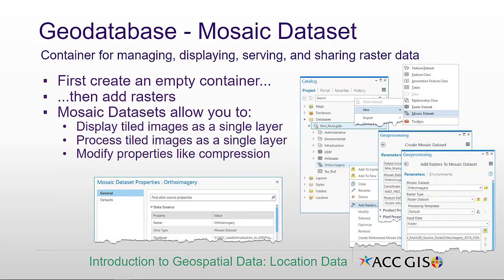That advanced object is a mosaic data set, which is a container for managing, displaying, serving, and sharing raster data. If we have a large set of image data, we can use mosaic data sets to display the tiled images as a single layer, so we don't have to load 100 images into our GIS software. We can load one mosaic data set that then loads the 100 images tiled side by side.